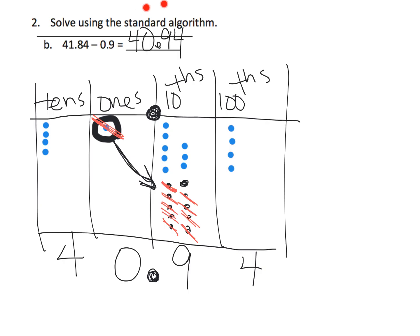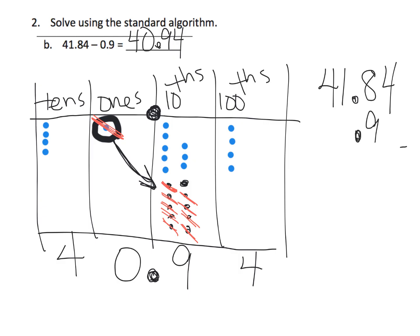But in this case they want us to use that standard algorithm. I wanted you to see this, teachers, because it's really important that we let our students understand where all these rules are coming from — it's not just arbitrary. So the standard algorithm: I'm going to write 41 and eighty-four hundredths. We're going to line up that decimal. Why? Because if this says to take away nine tenths, the tenths column lines up perfectly, so that's why we put the nine there.